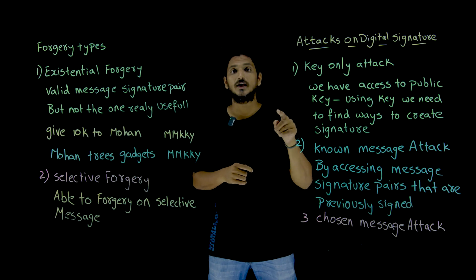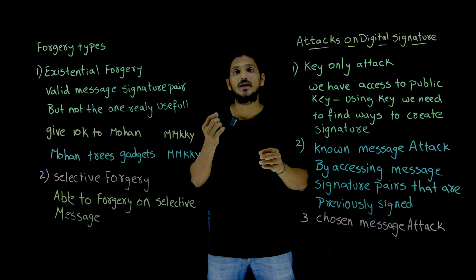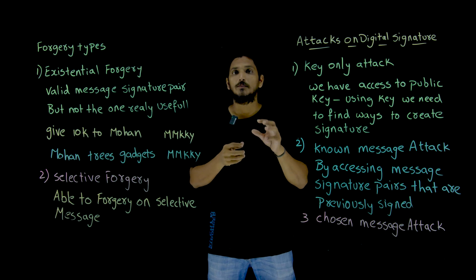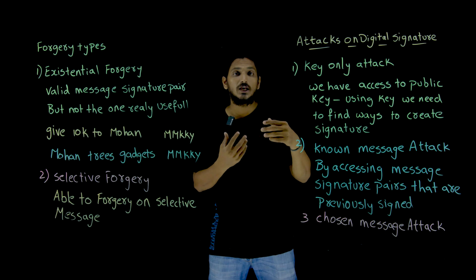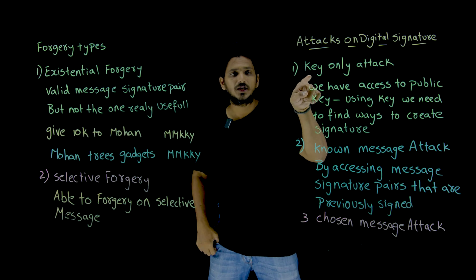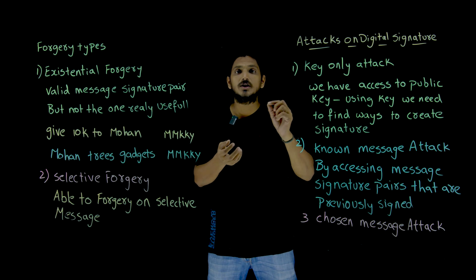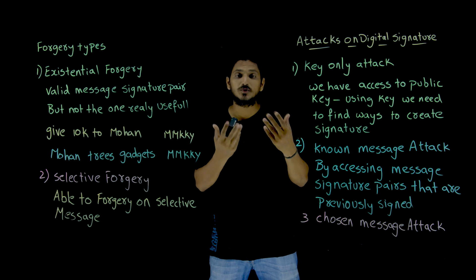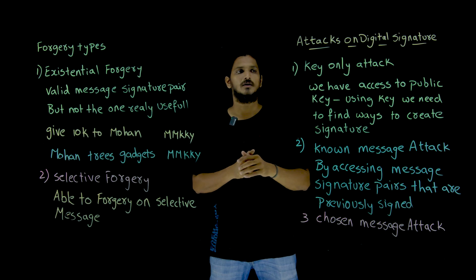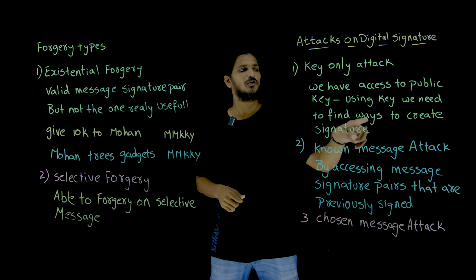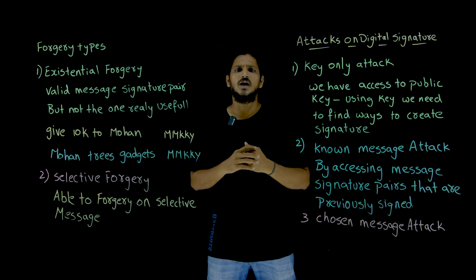The first one is key only attack. Digital signature is done using asymmetric keys — private and public keys. The public key is available to everyone to verify the signature. So key only attack means: using the public key, is there a way to forge the signature? If you have that way, we call it a key only attack — using the public key we need to find ways to create a signature.